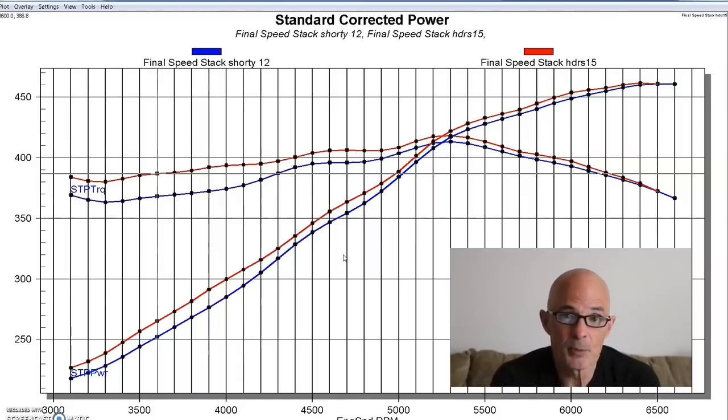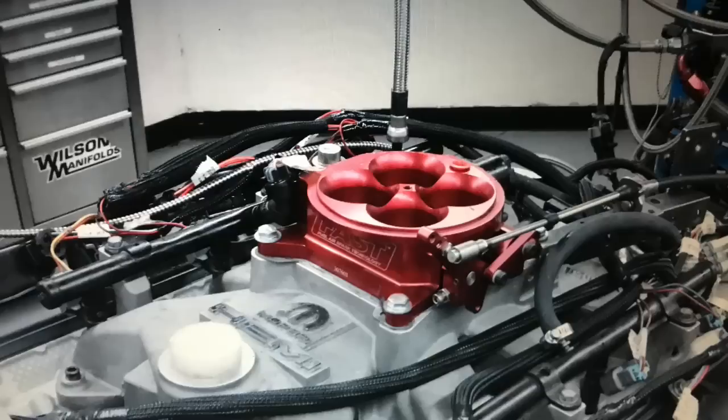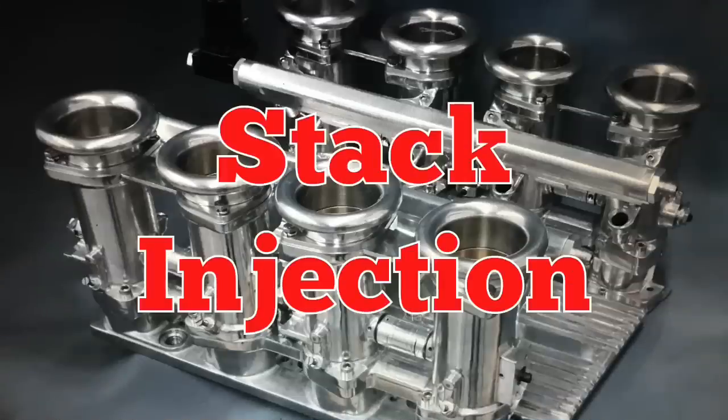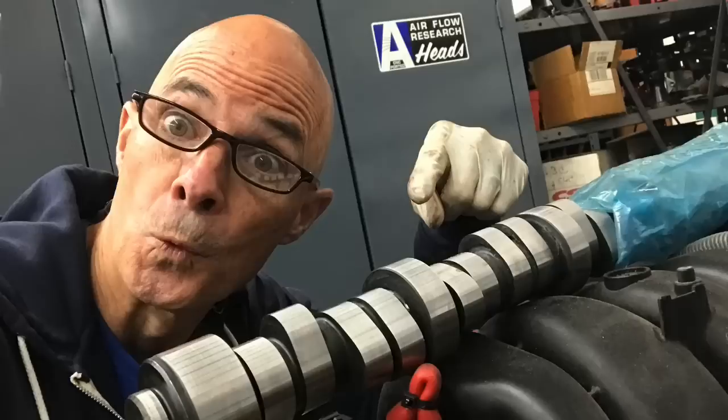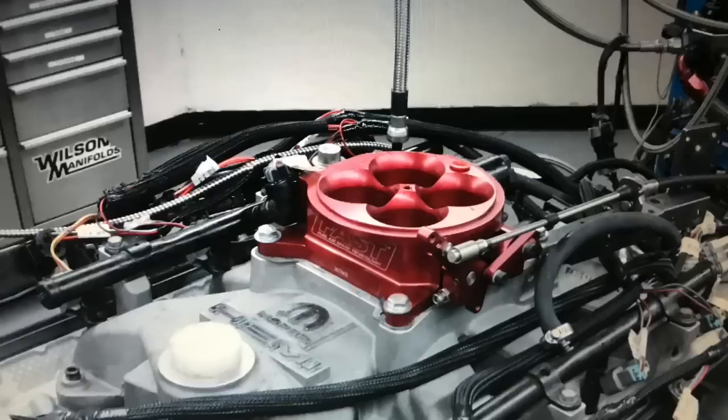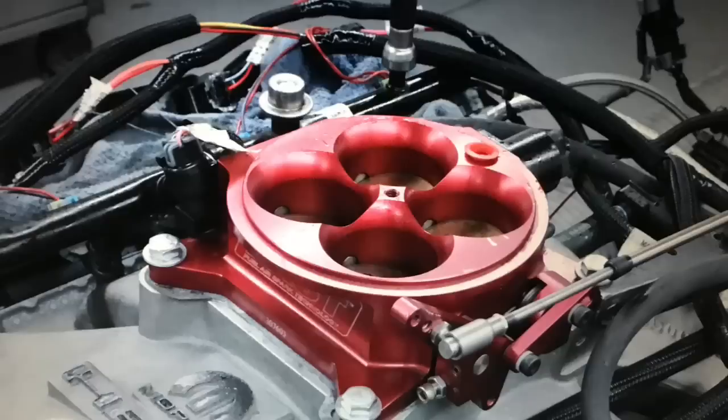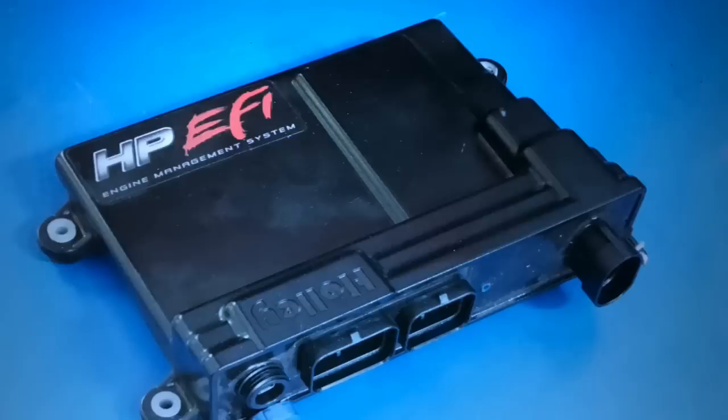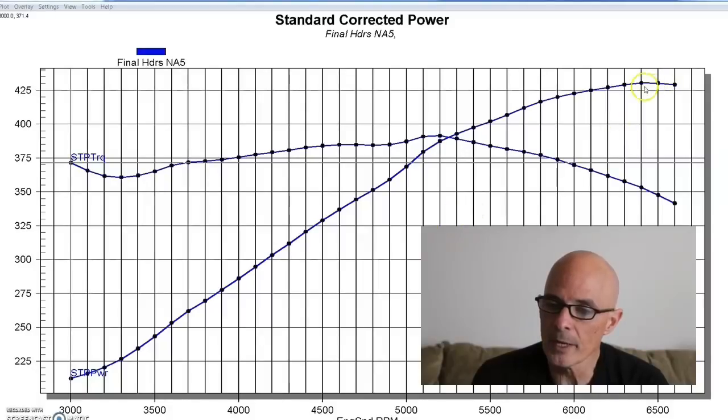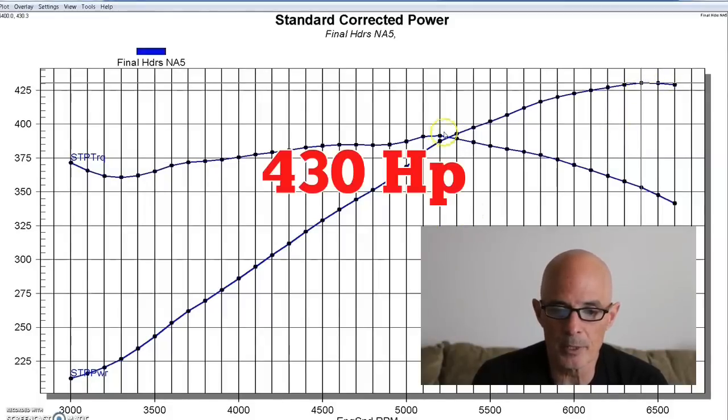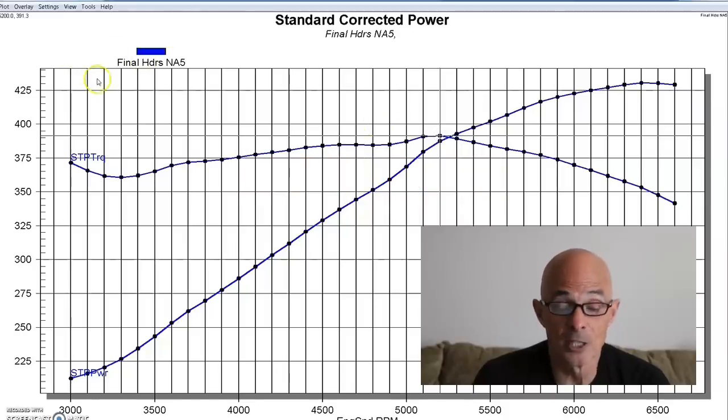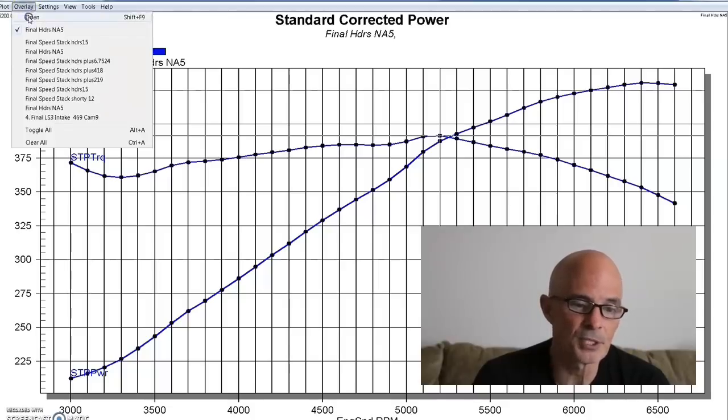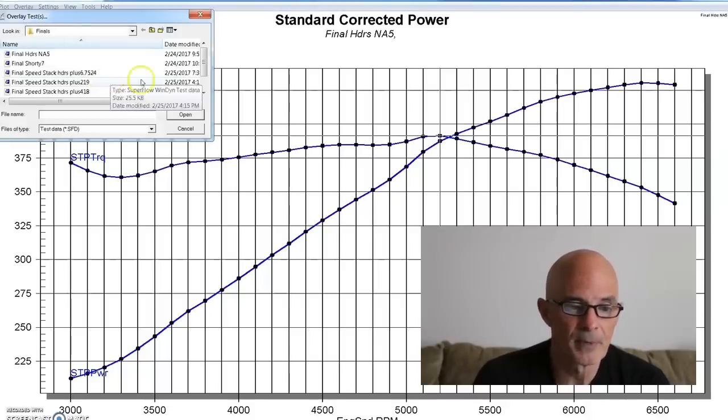So now let's take a look at the difference between the single plane intake and the Speedmaster stack injection. Now that we've run the header test we can take a look at the difference between the intake manifolds. So we've got our 5.7 liter Gen 3 Hemi with that mild cam in it. And we've got the single plane Mopar performance intake with the 4150 throttle body on it. This was all run with a Holley HP management system. So we had our combination making 430 horsepower and 391 foot-pounds of torque. That was with the single plane intake.